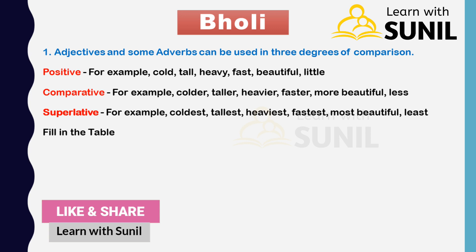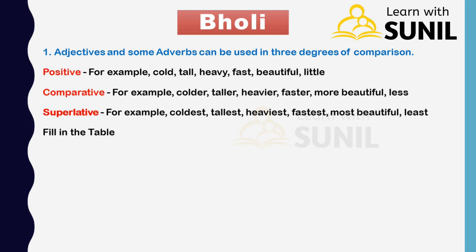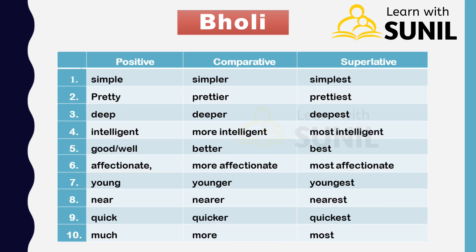First, adjectives and some adverbs can be used in three degrees of comparison. Positive — for example: cold, tall, heavy, fast, beautiful, little. Comparative — for example: colder, taller, heavier, faster, more beautiful, less. Superlative — for example: coldest, tallest, heaviest, fastest, most beautiful.